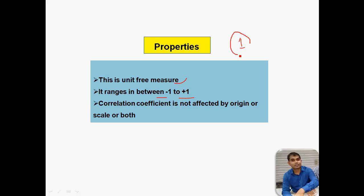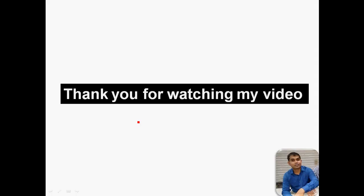A perfectly correlated pair of variables would have a correlation of 1, and if negatively correlated it could be something like minus 0.89. The correlation coefficient is not affected by either origin or scale or both. I hope you enjoyed and understood what is the correlation coefficient, its assumptions, and its properties. If you enjoyed, please subscribe to this YouTube channel for more videos in the future.